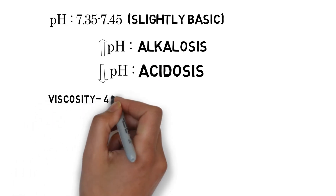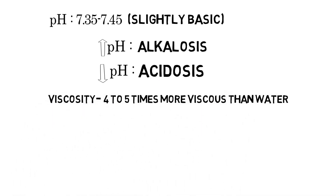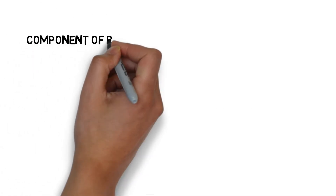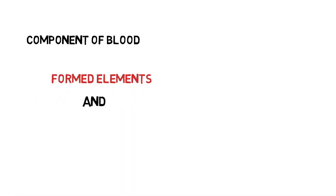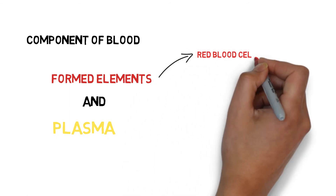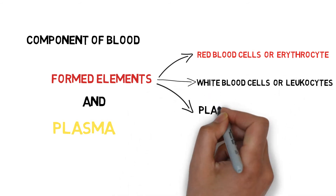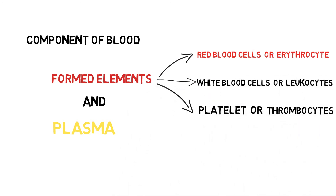Blood is four to five times more viscous than water, because of red blood cells and plasma proteins. Moving on to the components of blood — blood is formed from two components: formed elements and plasma. Formed elements are red blood cells or erythrocytes, white blood cells or leukocytes, and platelets or thrombocytes.